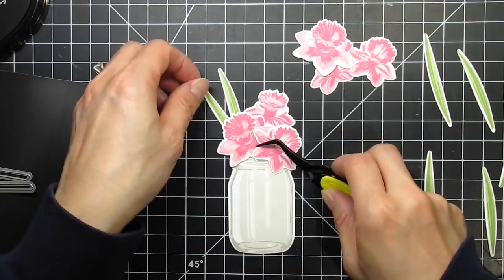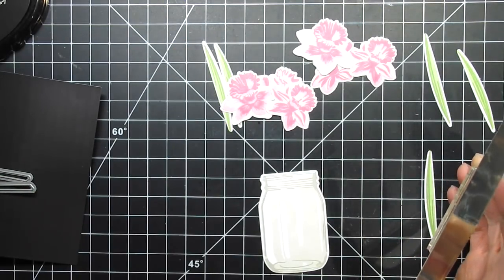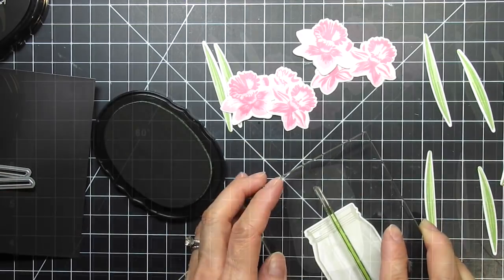When all of the pieces have been die-cut, I start arranging the flowers and leaves with the jar. I decide that the jar definitely needs stems stamped in it, so I'm going to do that quickly with a large acrylic block.